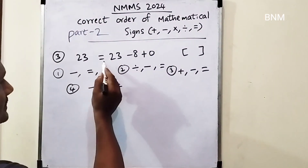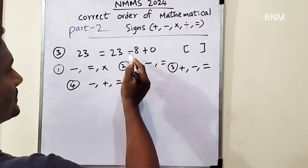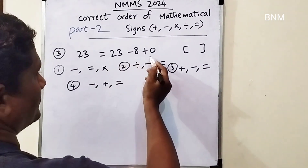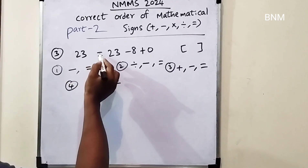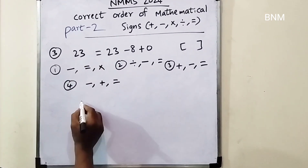Next, third bit: 23 equal to 23 minus 8 plus 0 is equal to 0. First one is minus.